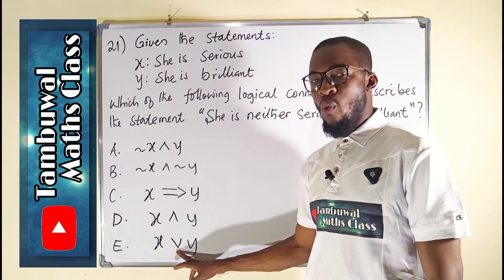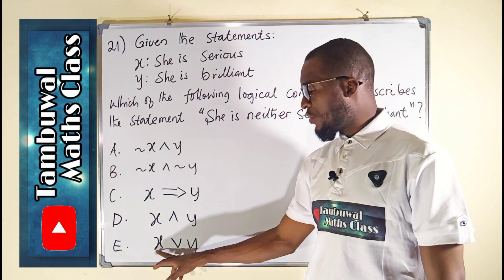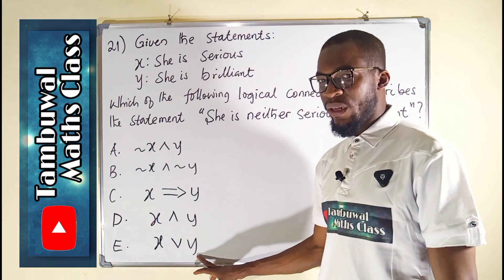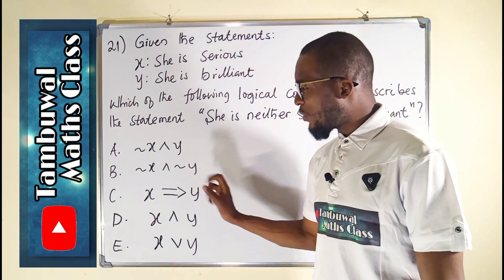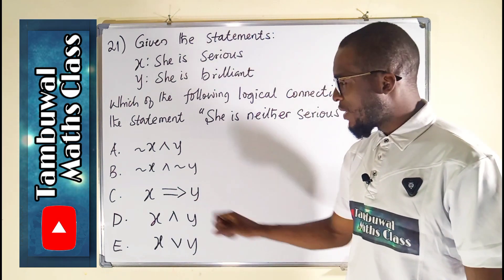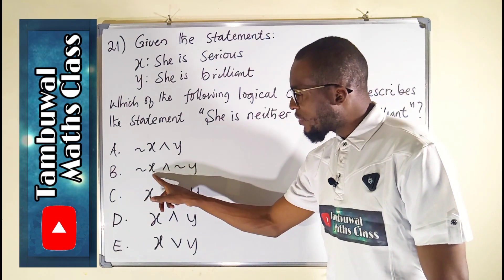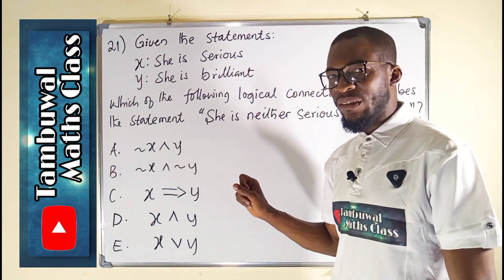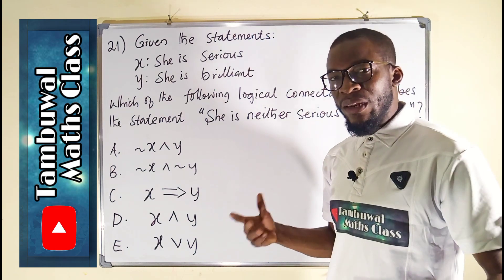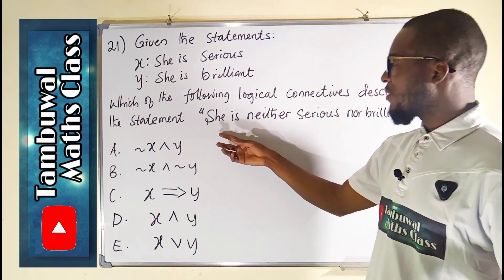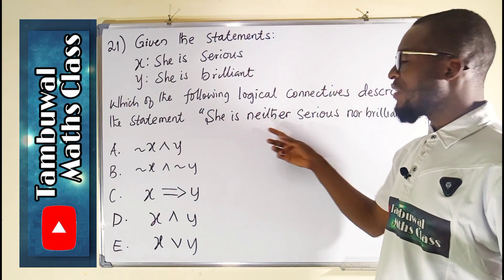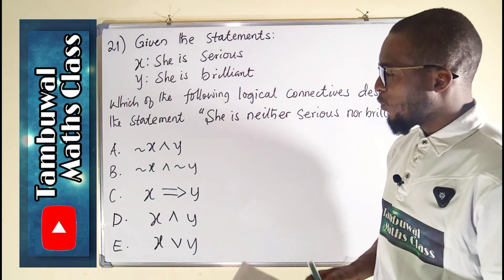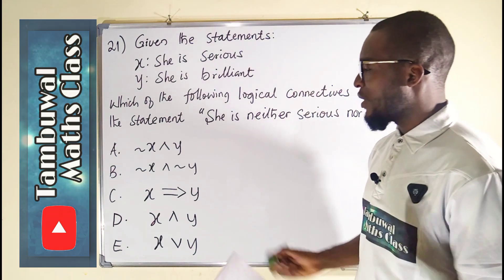This option describes OR — it means she is serious or she is brilliant. But look at Option B: she is not serious and she is not brilliant. In English, this can be translated as 'she is neither serious nor brilliant.' Therefore the right option is B.